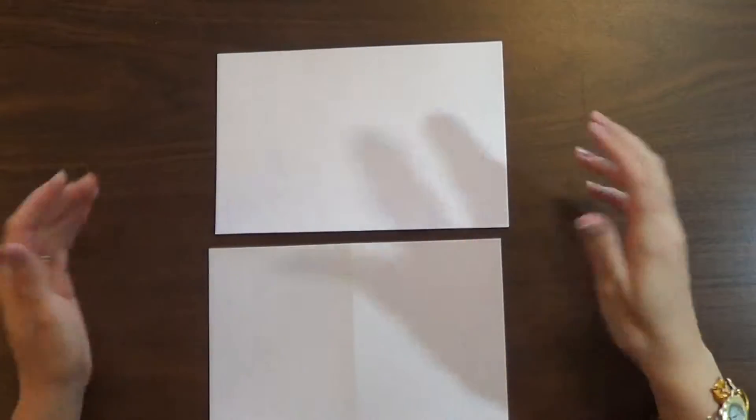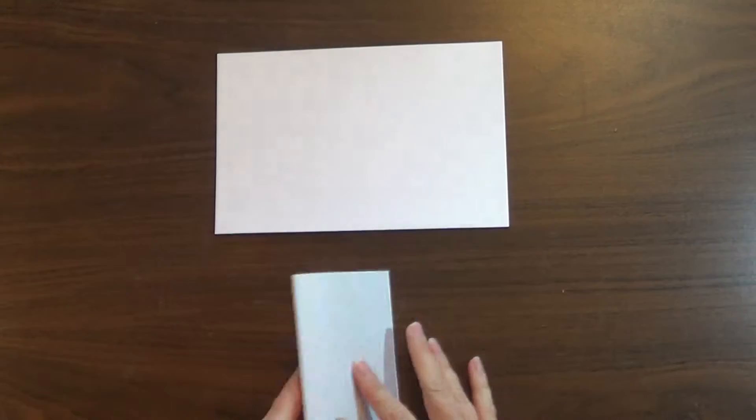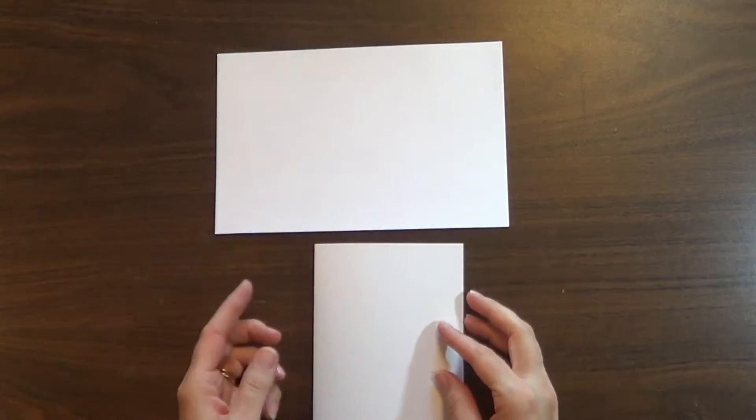So if you have your standard piece of 8.5x11 cardstock and you slice it in half, score it again, then you get two card fronts.